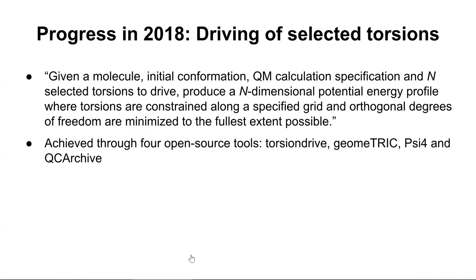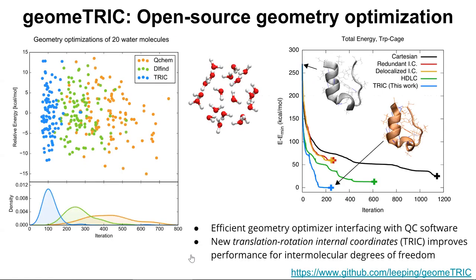This first part was achieved through a combination of open-source tools. The first is a tool called geomeTRIC — an open-source tool for geometry optimization. Similar to force balance, instead of optimizing force field parameters, we're now optimizing geometries. This code talks to quantum chemistry codes, passing them Cartesian coordinates and getting energies and gradients back.